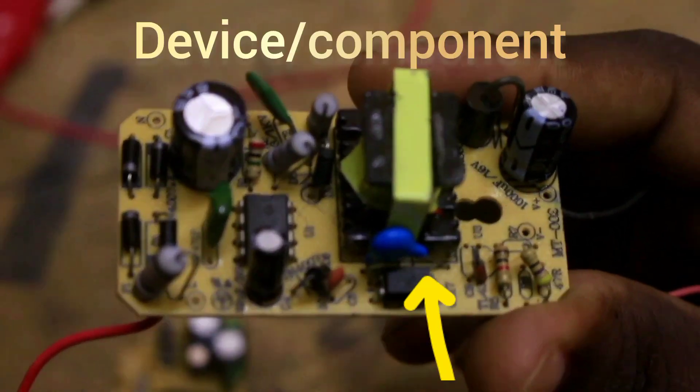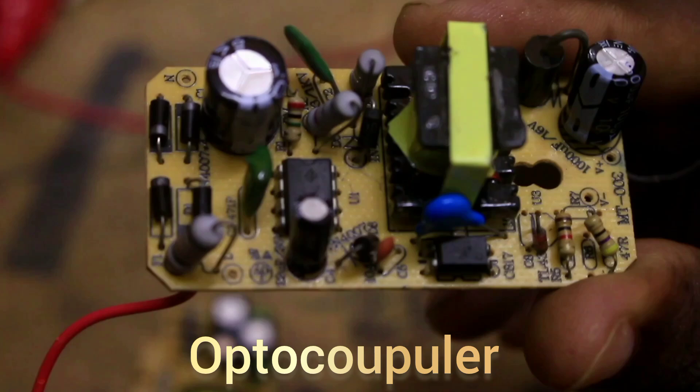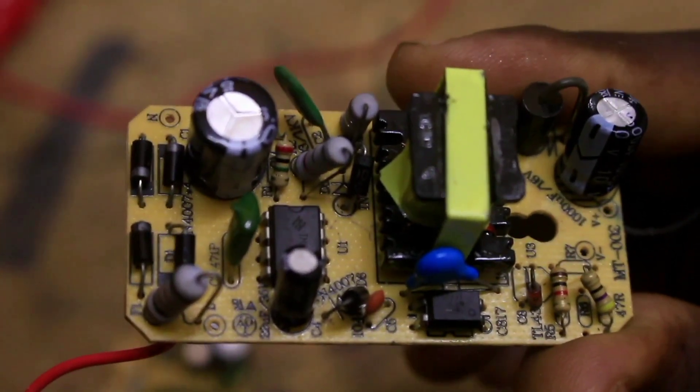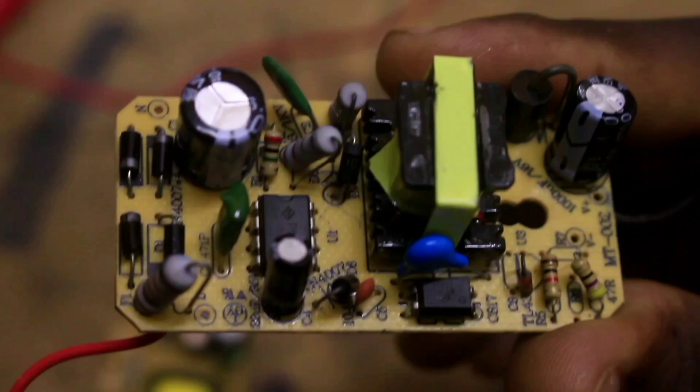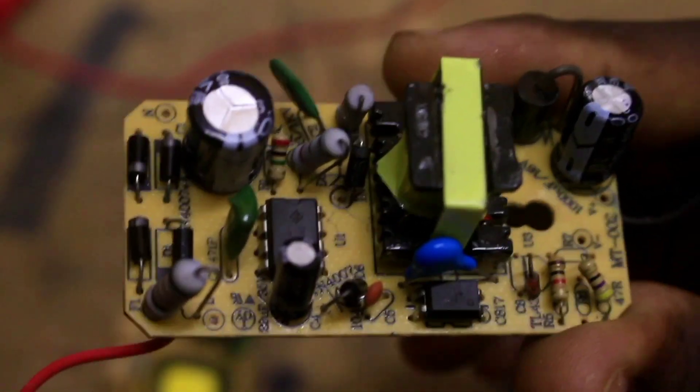In every SMPS power supply, you will find this device, and this device is called an optocoupler. It is used in the feedback circuit of the SMPS power supply, where it serves the purpose of isolating the low voltage side from the high voltage side.